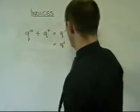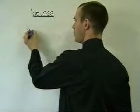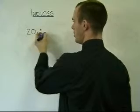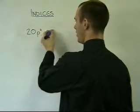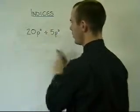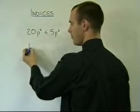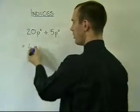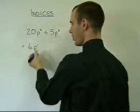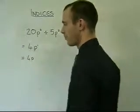To make it a little bit more complicated, we can add in coefficients like we did before. 20p to the 4 divided by 5p to the 3. First of all, we divide the numbers here. 20 divided by 5 is 4. p to the 4 divided by p to the 3 is p to the 1, or we can just write 4p.